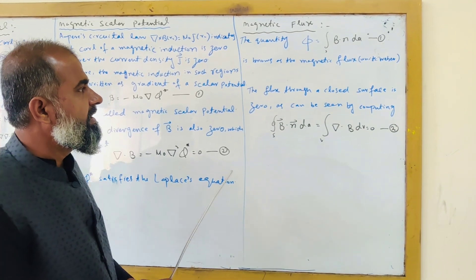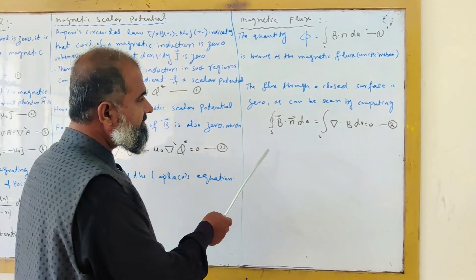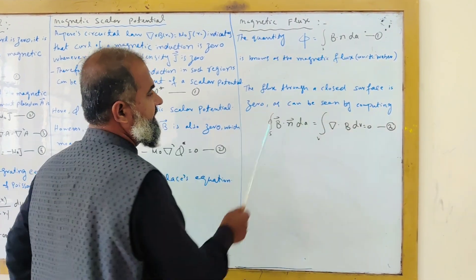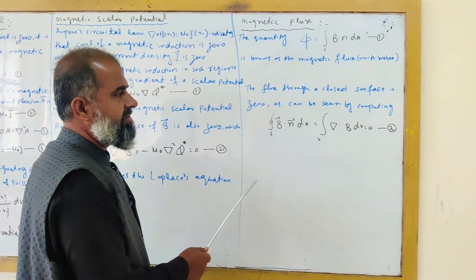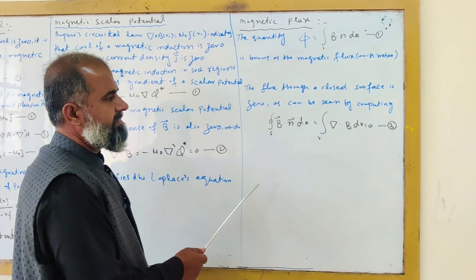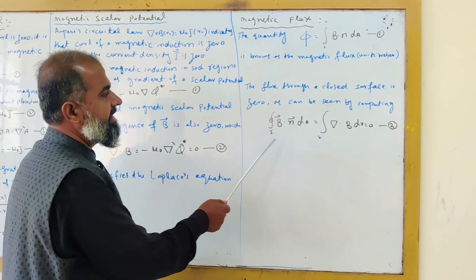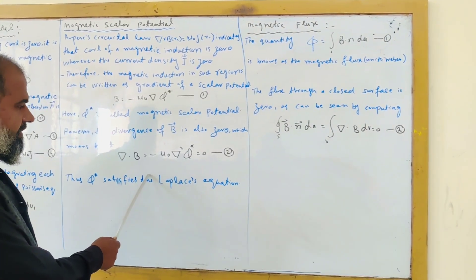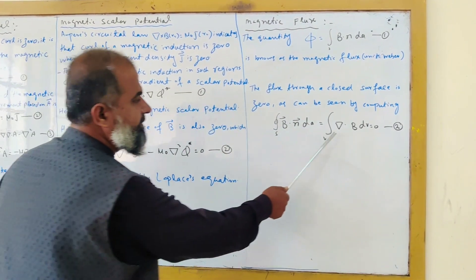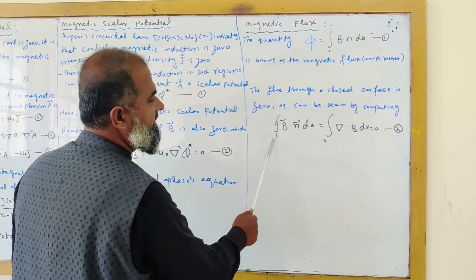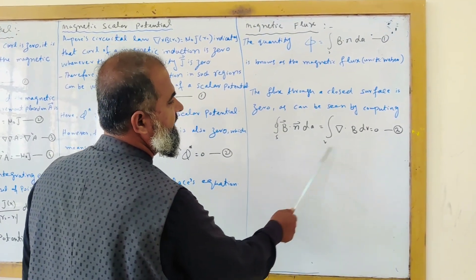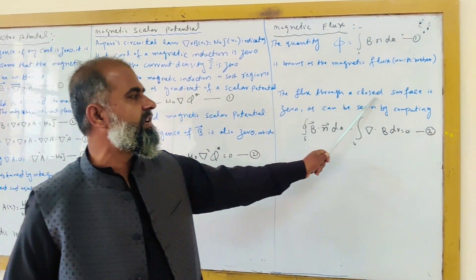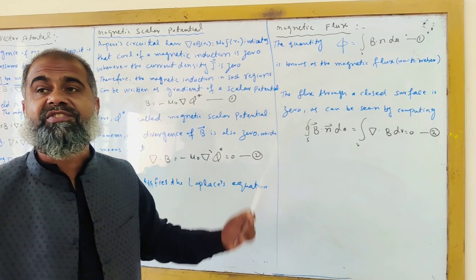So the point is, if you convert this surface integral into a volume integral using divergence theorem, you see that del dot B equals zero in equation 2. Put this del dot B equals zero here, then the surface integral of B dot n becomes zero. That's why the flux through a closed surface is zero.